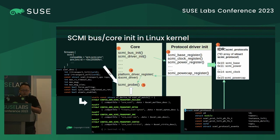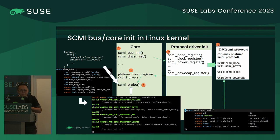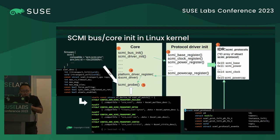In SCMI probe, it tries to find a match by parsing the device tree and finding the SCMI node — in this case called ARM-SCMI-SMC, meaning it uses SMC transport. You then find a match in the transport's data structure described by the C structure called SCMI DSC, which contains the transport initialization functions and relevant operations belonging to that transport.